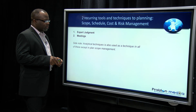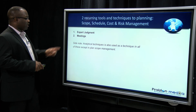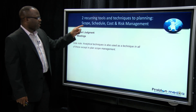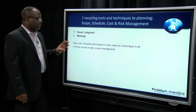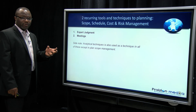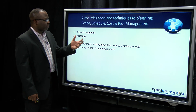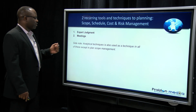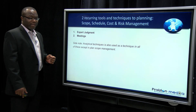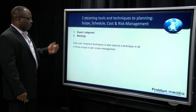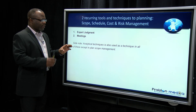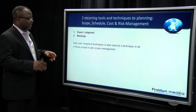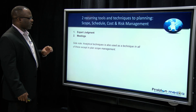Analytical techniques is also used as a technique in all of these except scope management. The way I get around it is thinking about schedule, cost, and risk as being slightly more mathematical and analytical — and for that reason, we need analytical techniques. Scope is not so much mathematical, which is why we don't have it there. The PMBOK guide changes from edition to edition, so next edition they might throw analytical techniques somewhere else, but for now just use that as a way of remembering.